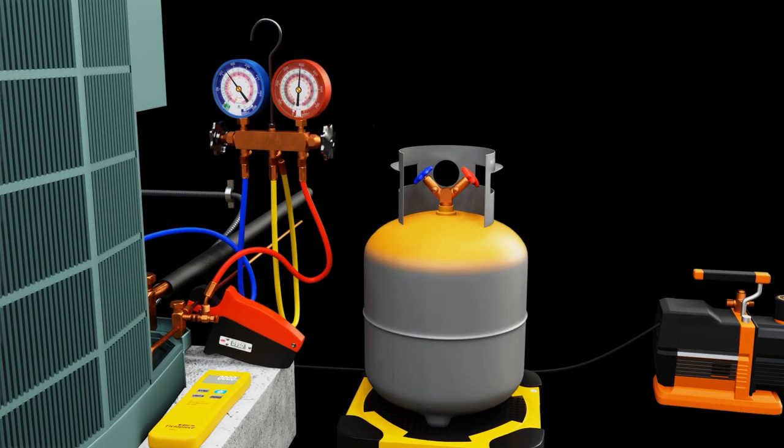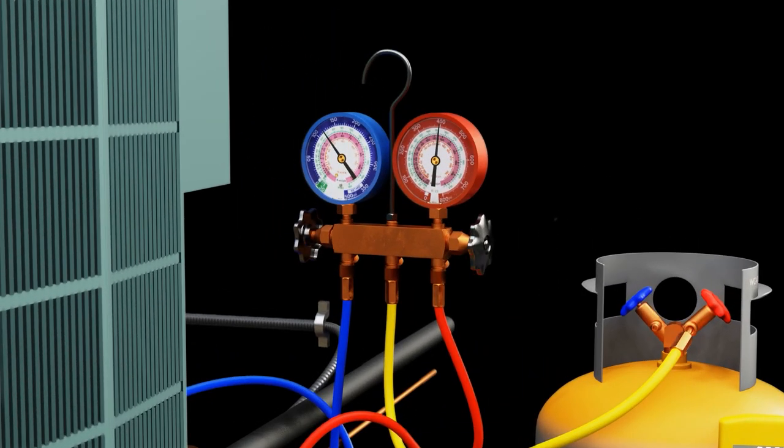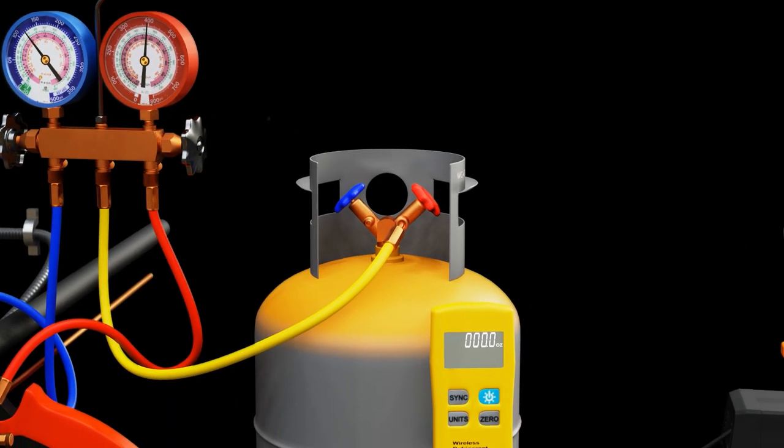We put the tank on the scale. And now we zero out the scale. You can see I'm connecting my center hose to the liquid gauge, I'm opening the valve. And then I'm going to purge a little bit of refrigerant before I open the tank. You could also do it in an opposite direction. We want to make sure that we get the air out of the hose.